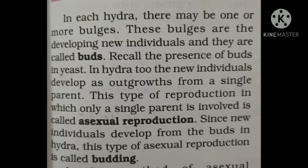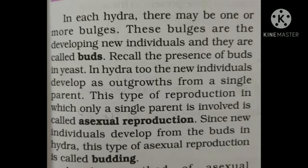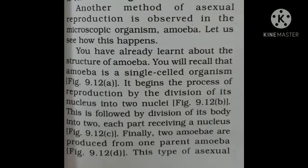So we are describing two types of asexual reproduction methods. The first is budding — in hydra a small outgrowth called a bud develops, grows into a new individual, and then detaches. That is the budding method.